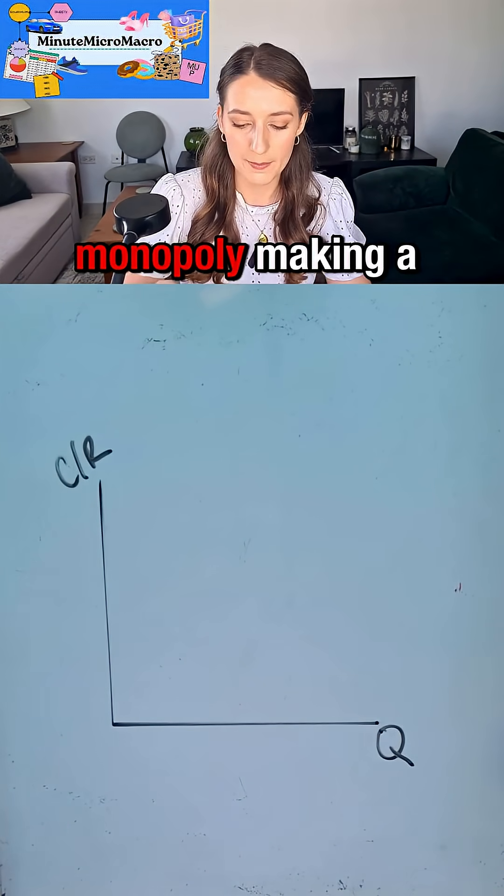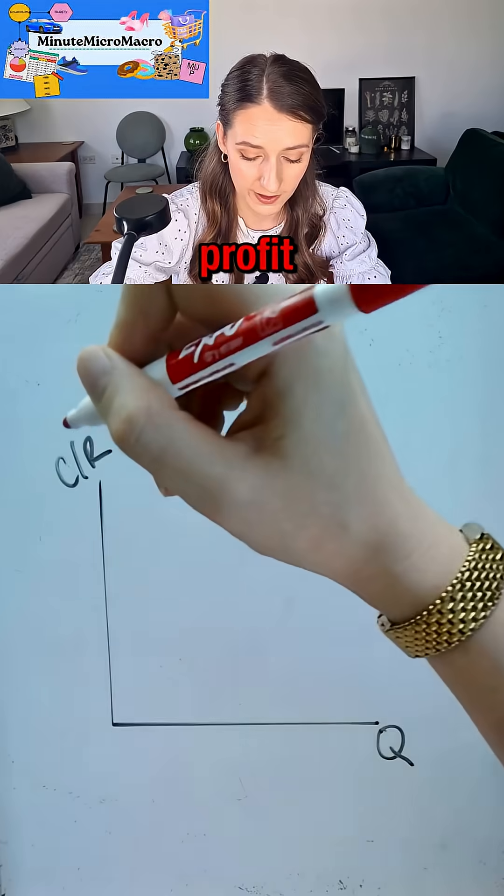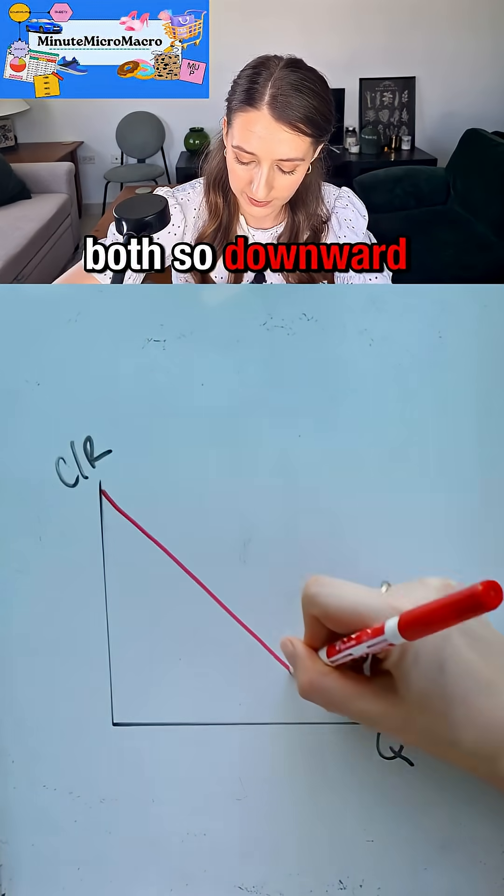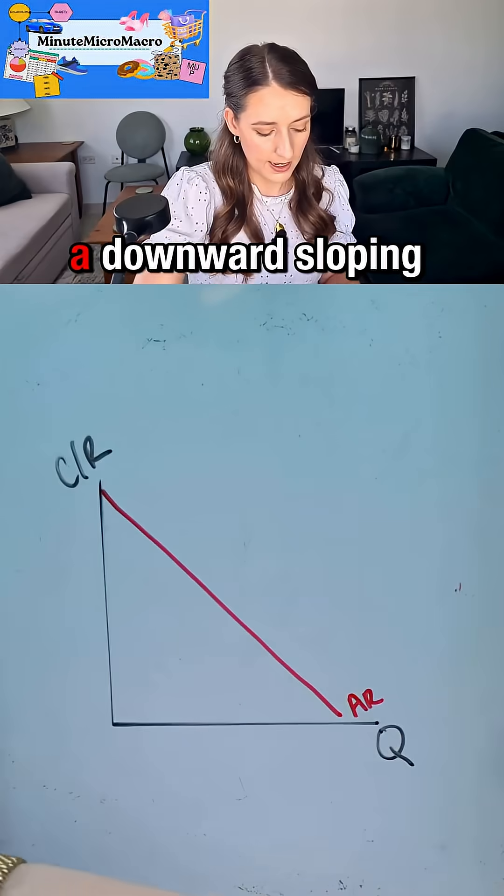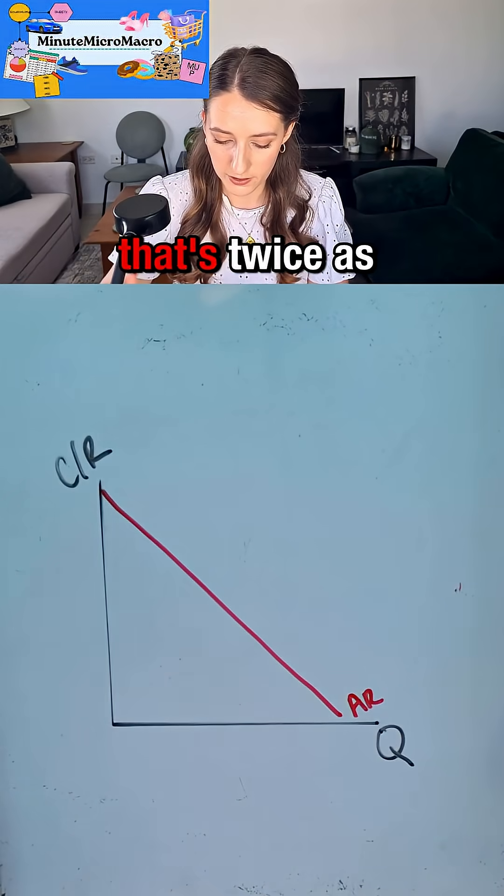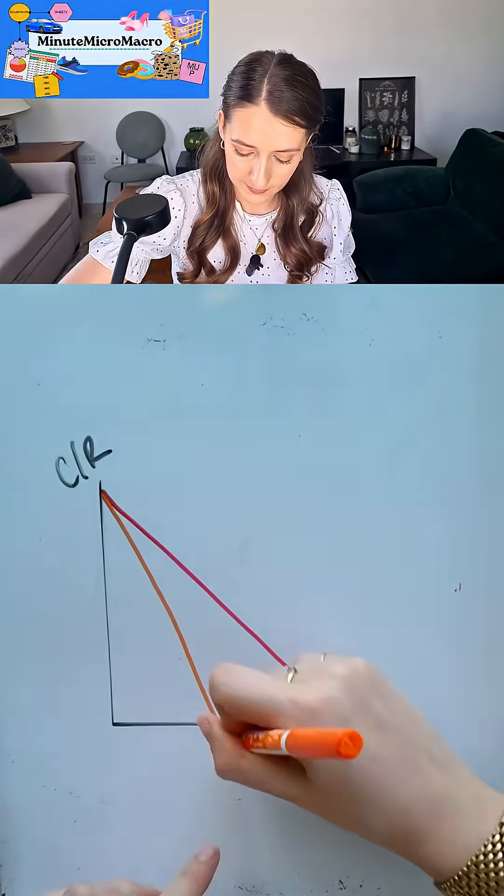Now I'm going to draw a monopoly making a profit in the short run or the long run—they can do both. So downward sloping average revenue, a downward sloping marginal revenue that's twice as steep. I'm going to aim for the midway point, marginal revenue.